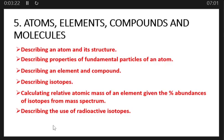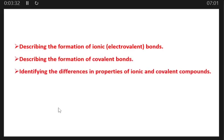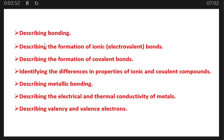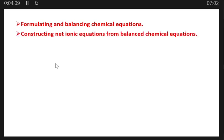Also describing the use of radioisotopes, describing the formation of ionic or electrovalent bonds, describing the formation of covalent bonds, identifying the differences in properties of ionic and covalent compounds, describing metallic bonding, describing the electrical and thermal conductivity of metals, describing valence and valence electrons. Describing bonding must also be known. Also, formulating and balancing chemical equations and constructing net ionic equations from balanced chemical equations.